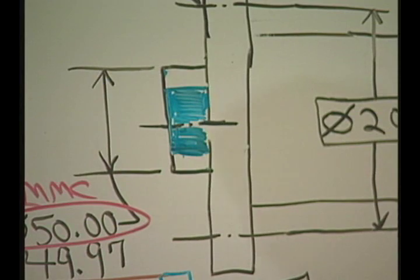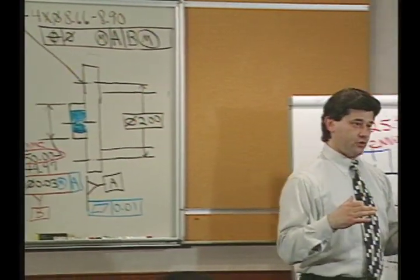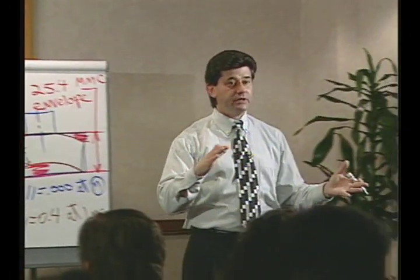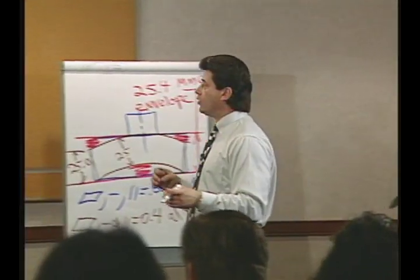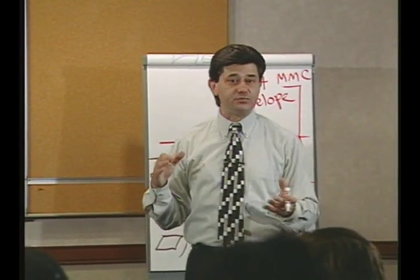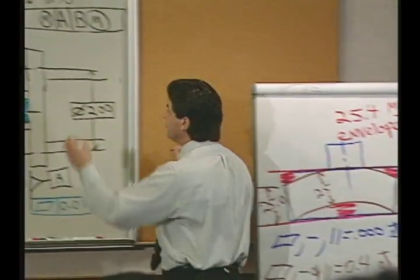As B gets smaller, the entire bolt circle gets to shift. It gets to move. So it's not one hole being able to take off in another direction as B gets smaller. It's the entire bolt circle moving.